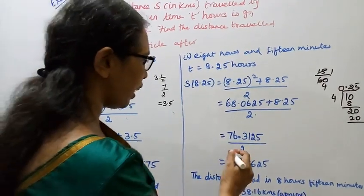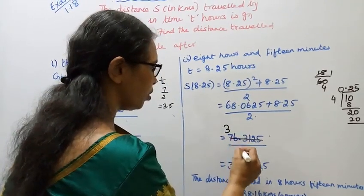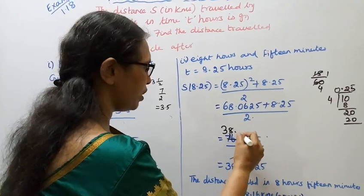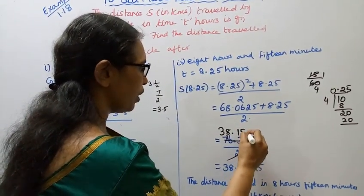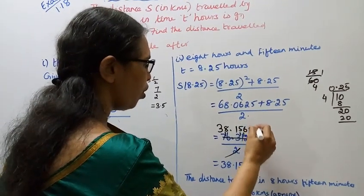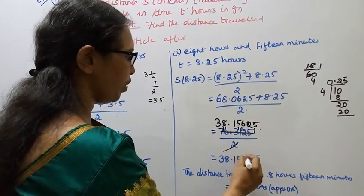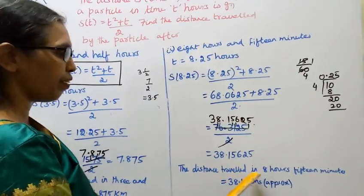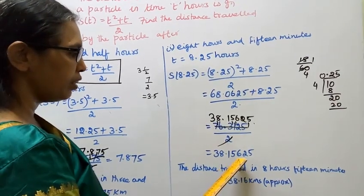5 divided by 2, cancel. 3, 2s are 2, 3s are 6, balance 1; 8, 2s are 16; 0.2, 1s are 2, balance 1; 5, 2s are 10, balance 1; 6, 2s are 12. Then 2, 2s are 4, balance 1, adding 0, gives 5. Result is 38.15625. So approximately 38.16 kilometers.